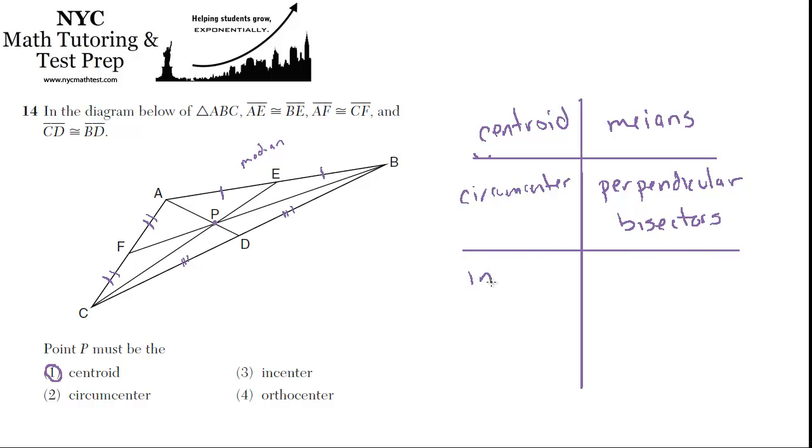The third one, the in-center. We find the in-center when we find the intersection of three angle bisectors.